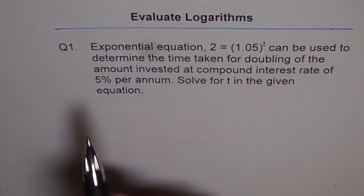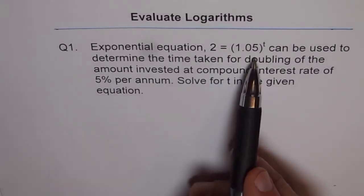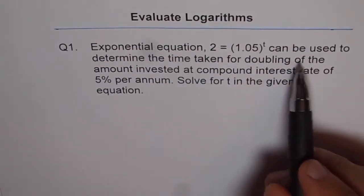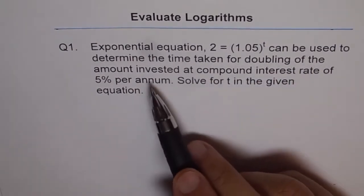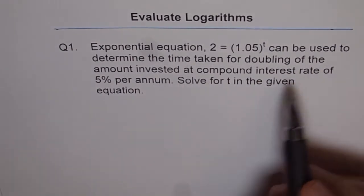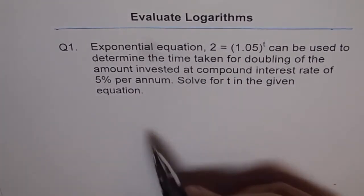Evaluate logarithms. Question 1: Exponential equation 2 = (1.05)^t can be used to determine the time taken for doubling of the amount invested at compound interest rate of 5% per annum. Solve for t in the given equation.